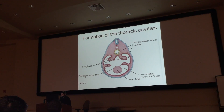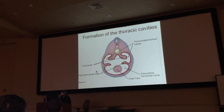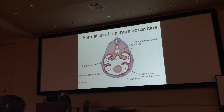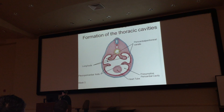You have pleuropericardial folds — the name tells you what they are: near your lungs and near your heart. The pericardioperitoneal canals connect the thoracic area to the abdomen like a passage. These canals are going to get sealed off as you go posteriorly at this point, since the embryo is laying with ventral down and dorsal up.